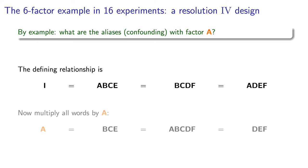If you do that calculation, you see that A is aliased with BCE, is aliased with ABCDF and is aliased with DEF. Notice that there are no two-factor interactions. The lowest interaction here is a third-order interaction. This is a great design if you want good, clear estimates of the main effects, because as we've said several times now, third-order or higher interactions seldom exist.